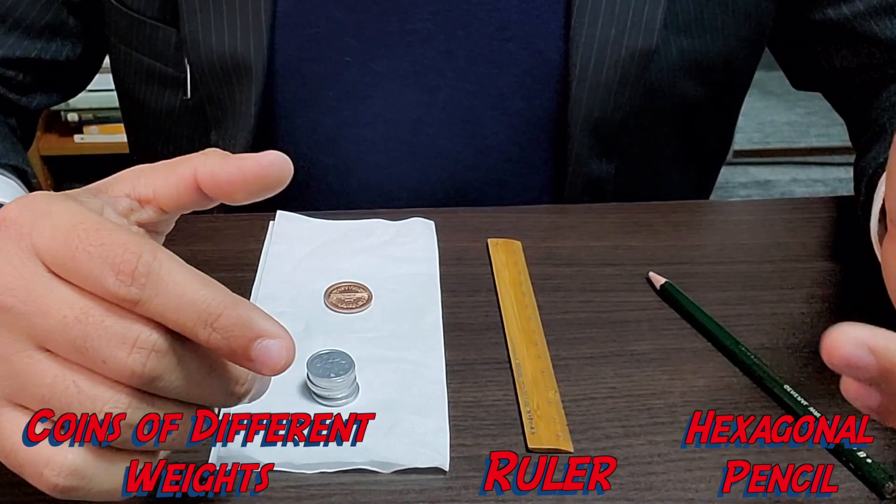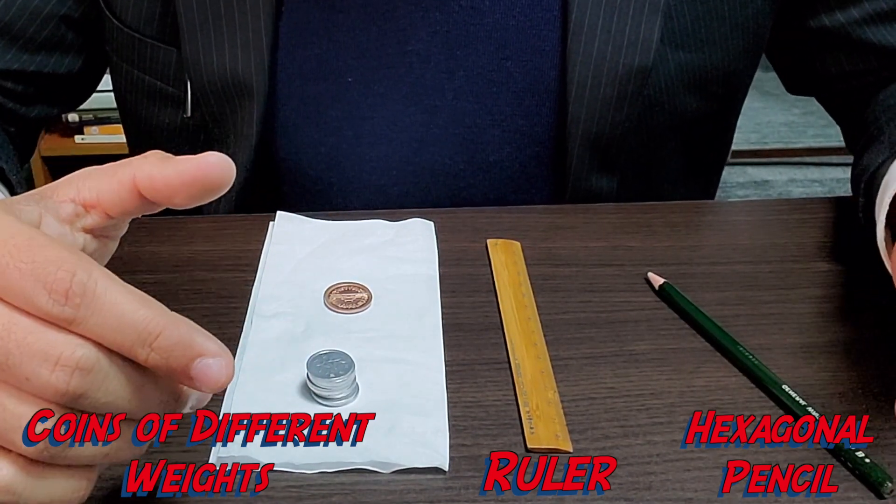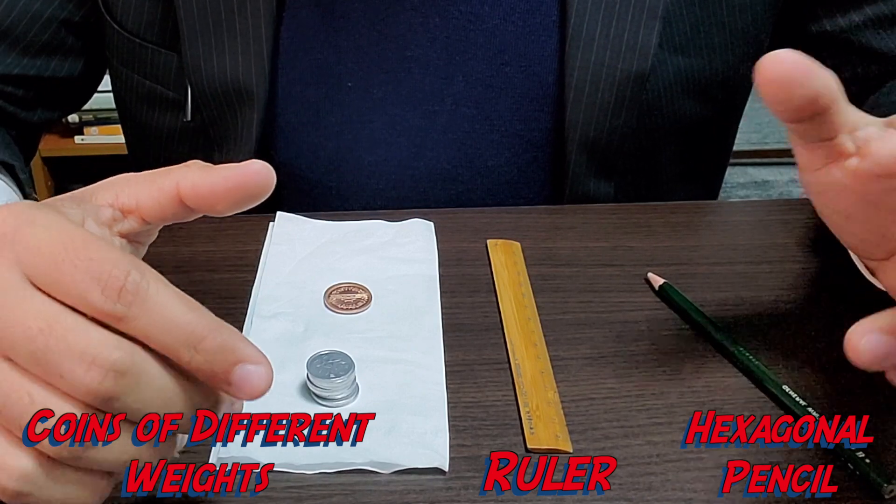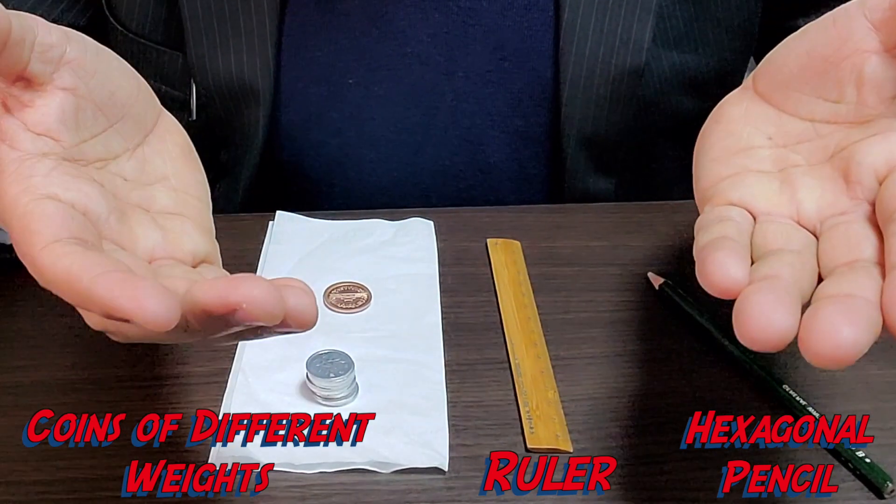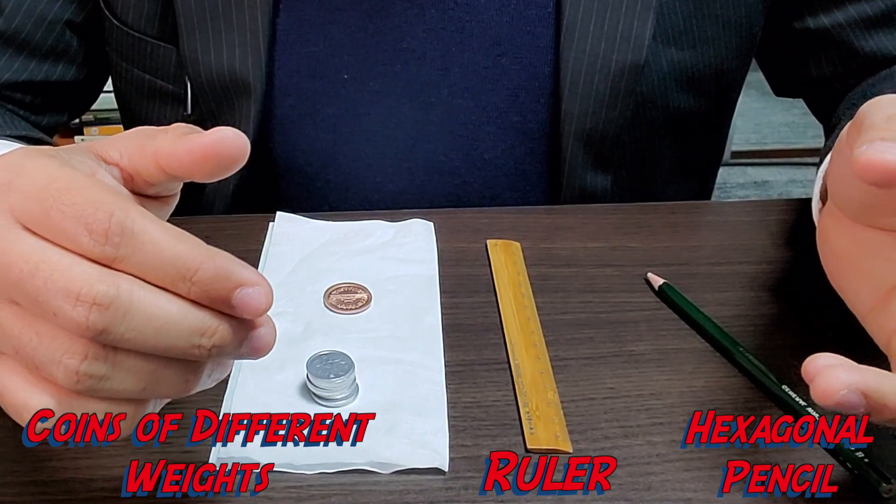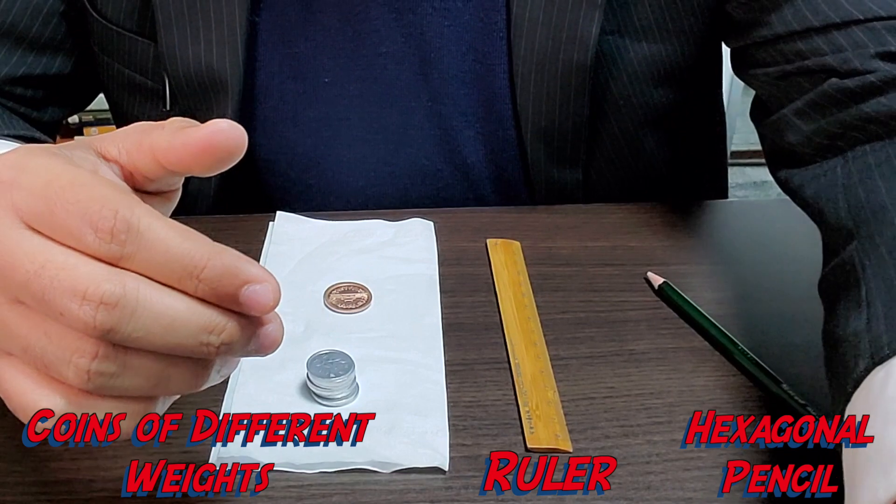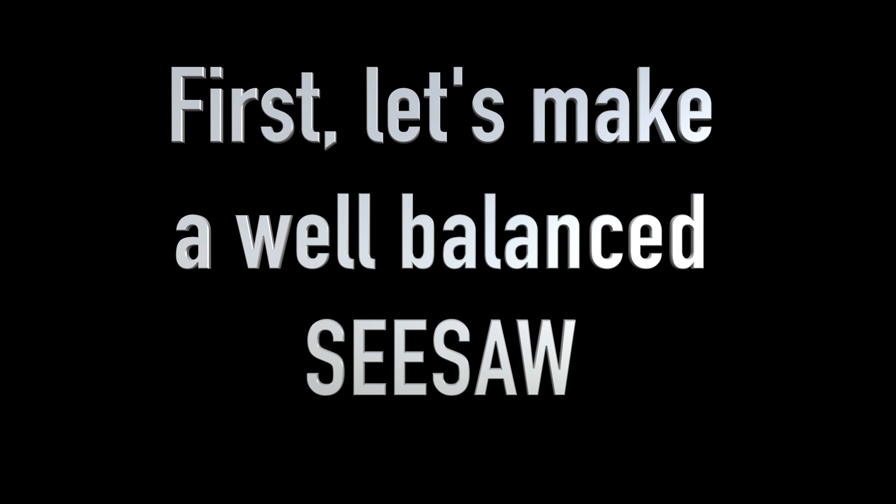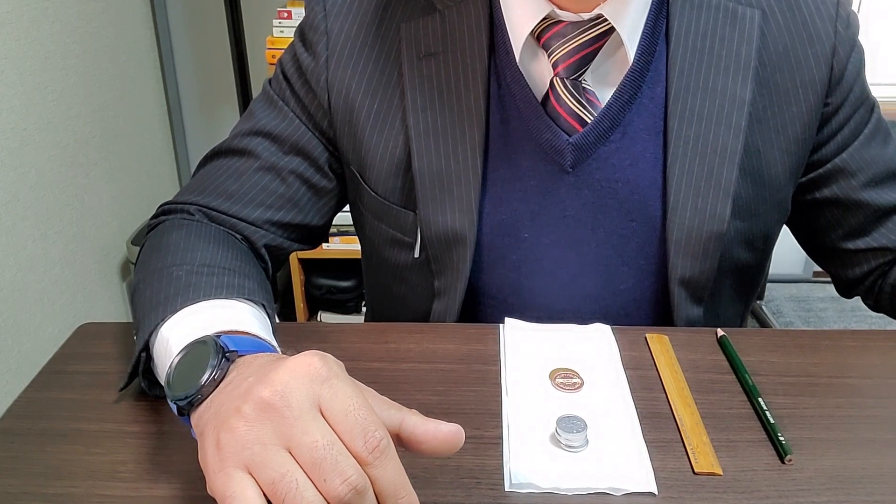If you're watching from outside Japan, don't worry about not having the Japanese currency with you. As long as you have coins of different weights available in your local currency, it's fine. For example, in the USA, it can be a penny versus dollar coin challenge. In the UK, it can be a penny versus pound coin challenge. In India, it can be a 1 rupee versus 10 rupee challenge. So let's get started.